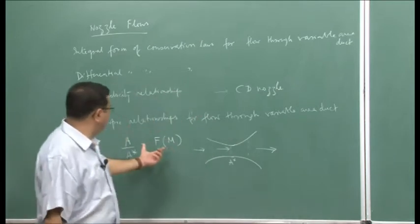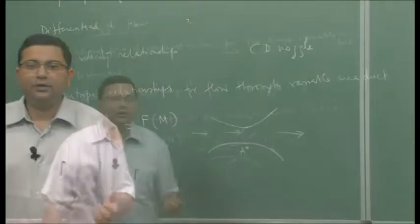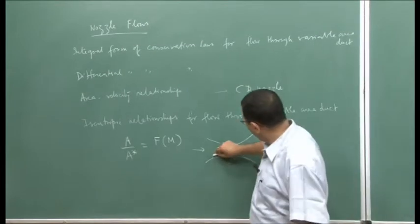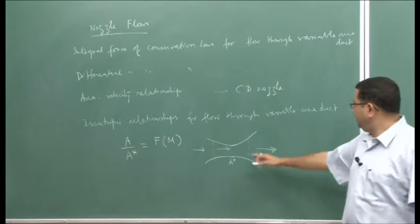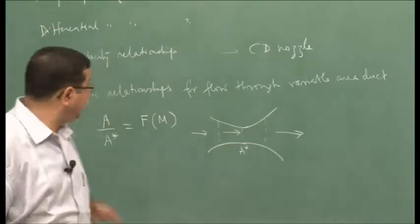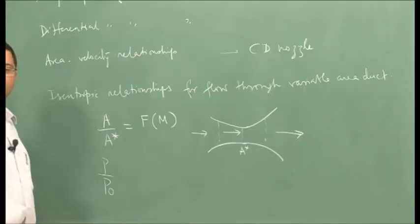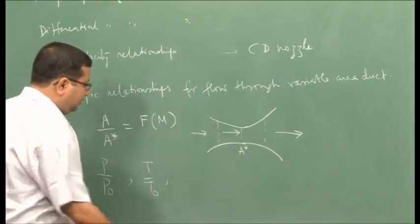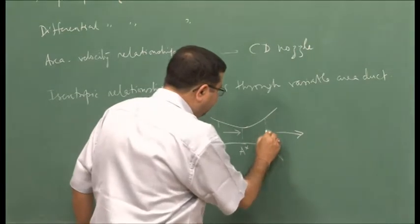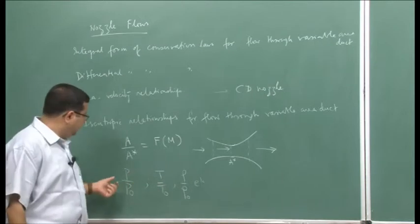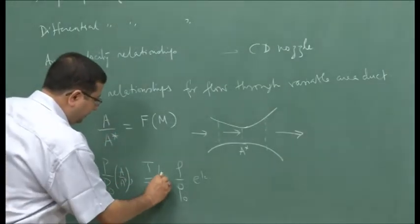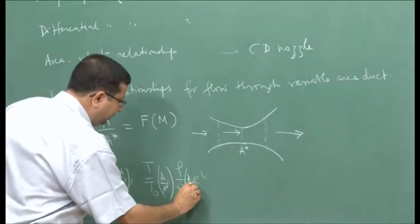Looking at the nature of this relationship, it is quadratic, so for every area ratio there are two possible solutions for Mach number — one subsonic and one supersonic. We derived expressions for P/P0, T/T0, and ρ/ρ0, where P, T, and ρ are values at a certain point. Since this is an isentropic relationship, these are functions of Mach number. Therefore, we obtained pressure ratio, temperature ratio, and density ratio all in terms of area ratio.